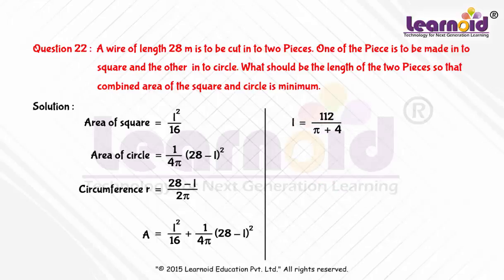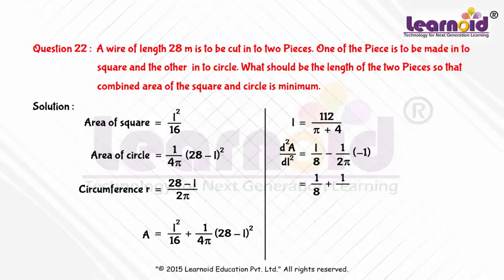To check for a minimum at L equal to 112 by (π plus 4), we find the second derivative. d²A/dL² is equal to 1 by 8 plus 1 by 2π. Since d²A/dL² is always positive irrespective of the value of L, A is minimum at L equal to 112 by (π plus 4).